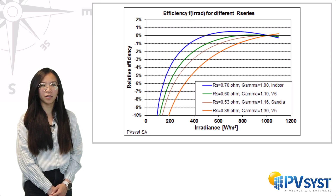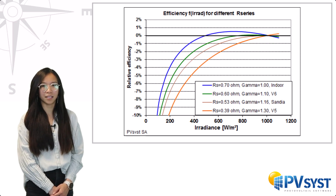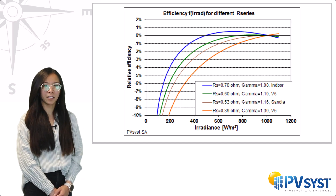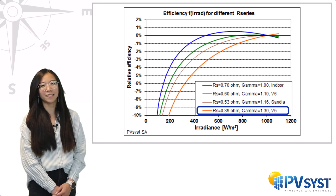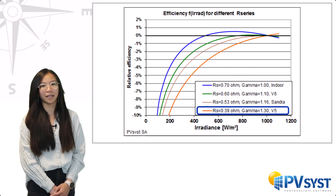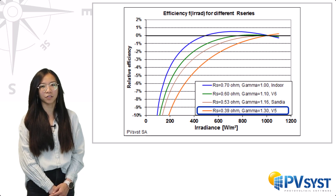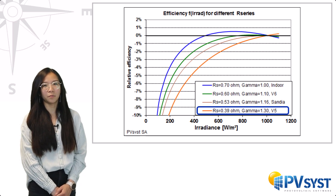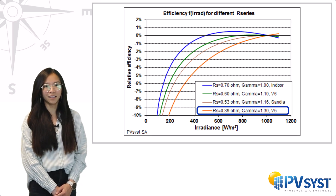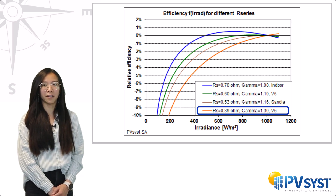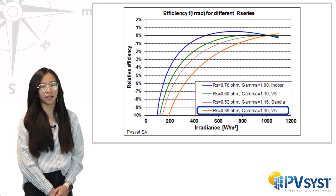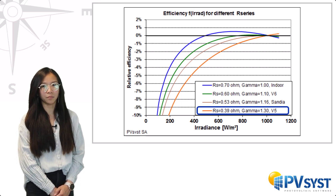The determination of low light performance is the key point of the PVSYS model. Historically, in version 5, PVSYS fixed the diode ideality factor to a default value of 1.25. According to our measurements at SUN, this gave a very bad result, and PVSYS was known for severely underestimating the low light performance.